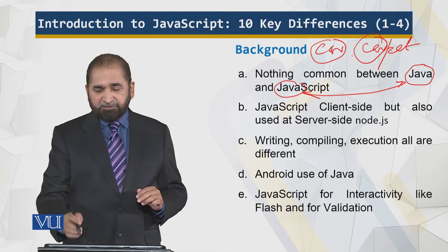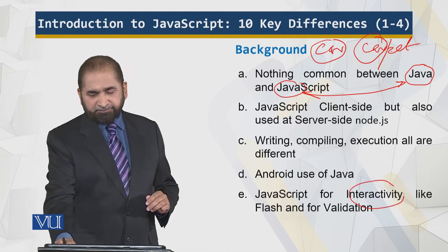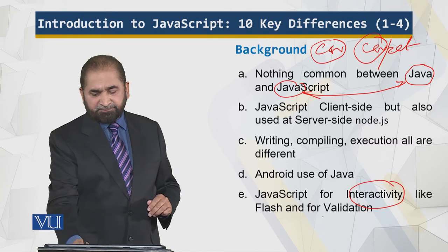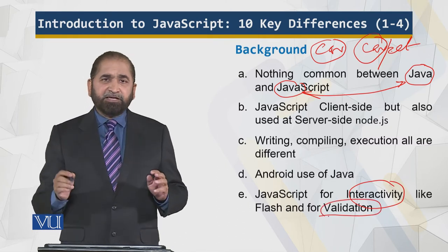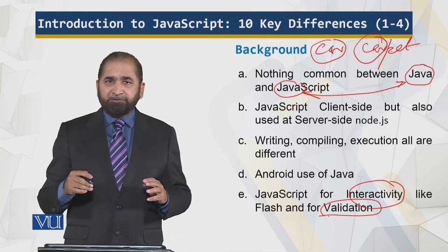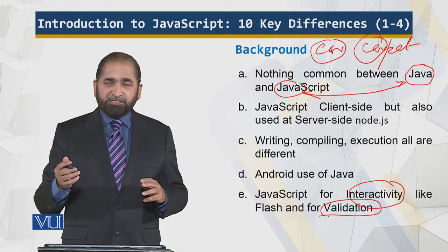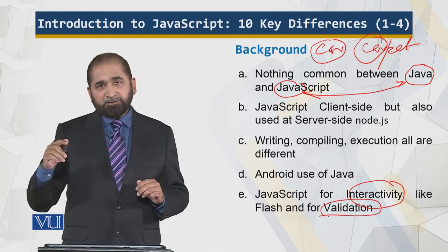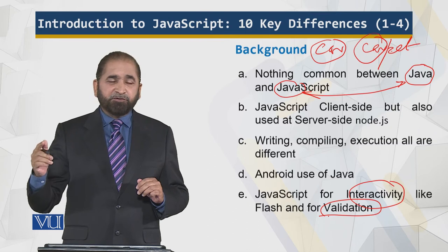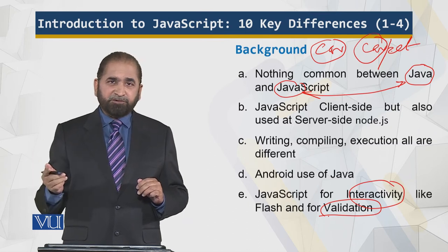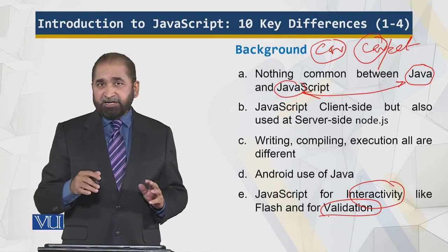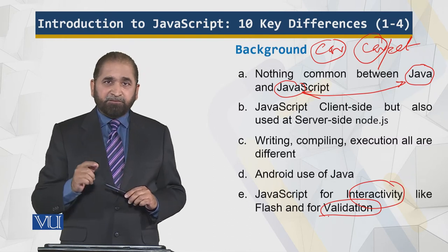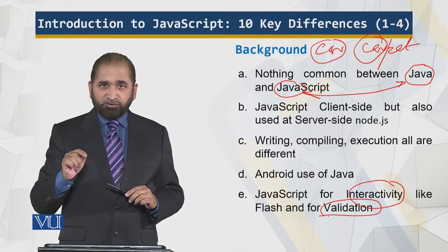JavaScript has a limited application domain. JavaScript is for interactivity — like Flash — and for validation. Validation means that when data is entered at the client side, JavaScript checks it without using the processing power of the server. It's checked at the client end. That is one key application of JavaScript: validation. Now let's look into more details.